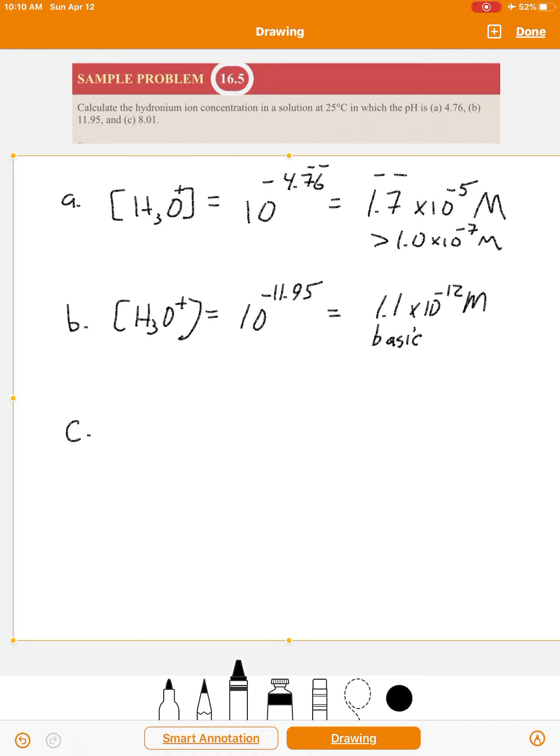Now we move on to C. C is 8.01. Again, pH is greater than 7, so that's basic. That's pretty close to 10 to the minus 8, so it's going to be almost 10 to the minus 8 in terms of concentration: 9.8 times 10 to the minus 9 molar. Again, that's basic, because pH is greater than 7, or the hydronium concentration is less than 10 to the minus 7.